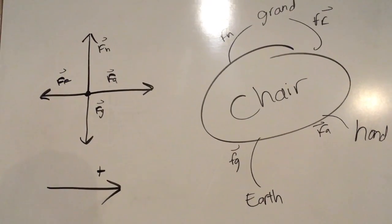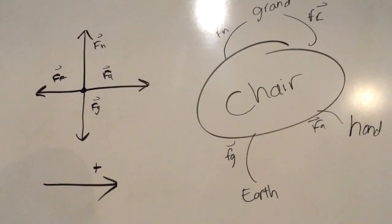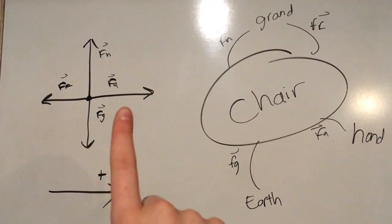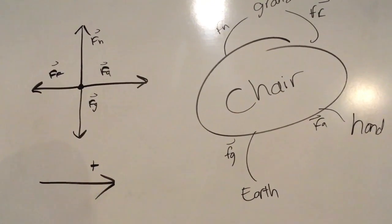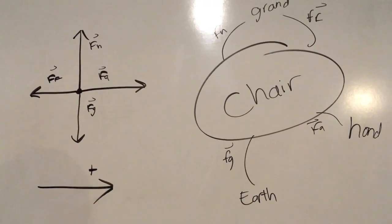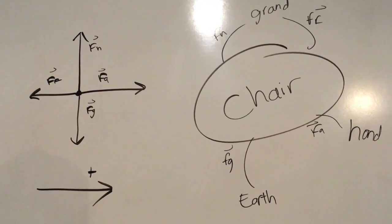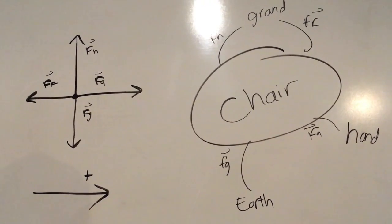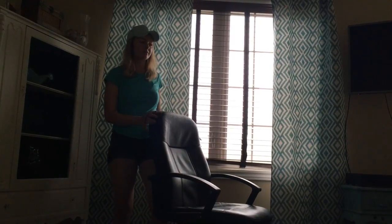As you can see, the net force is bigger in the positive direction due to the stronger applied force of my hand. We know that the chair is not at a constant velocity because the chair begins to speed up when I let it go.